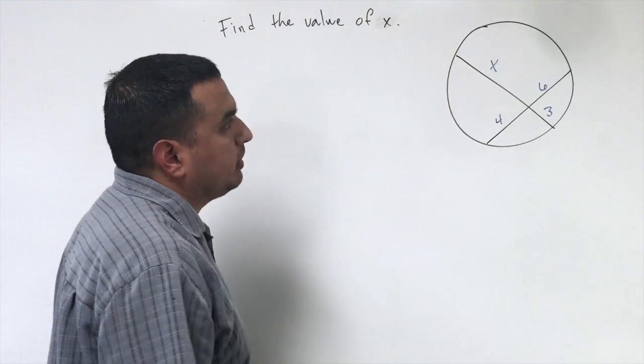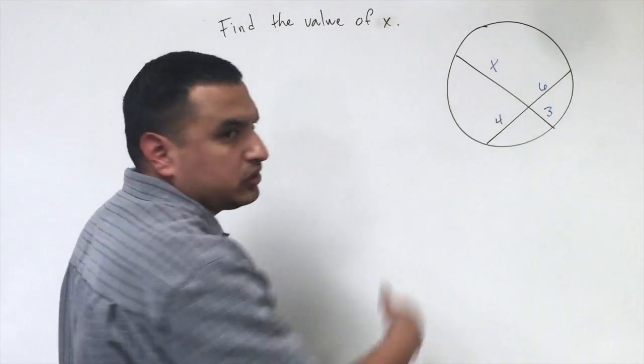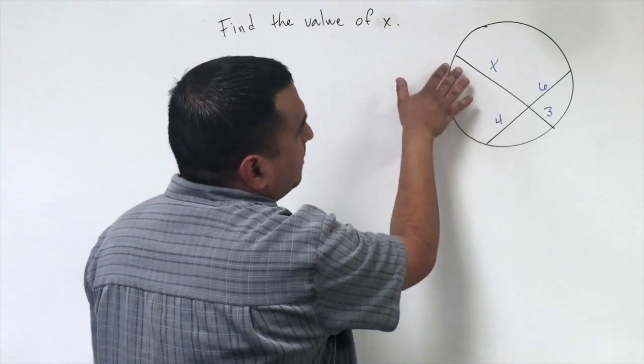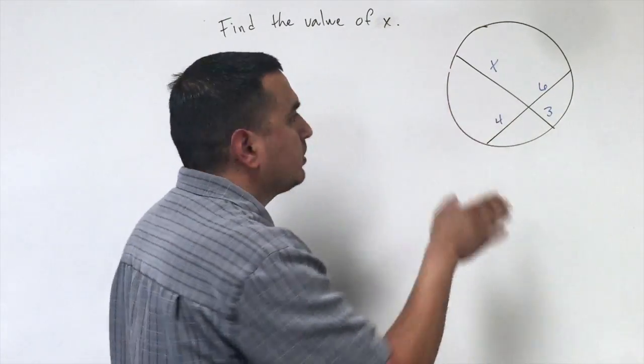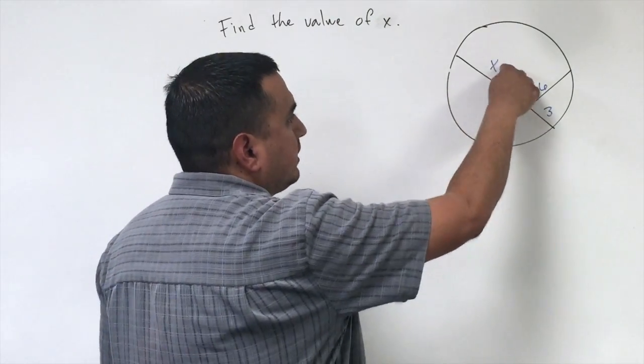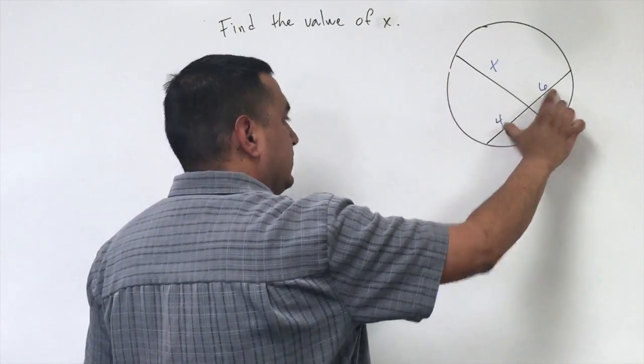The segment chord's theorem basically says that if I have two chords that intersect, it breaks these up into two different pieces, each chord into two different pieces. So I have an x here and a 3 here, and then I have the 4 and the 6.